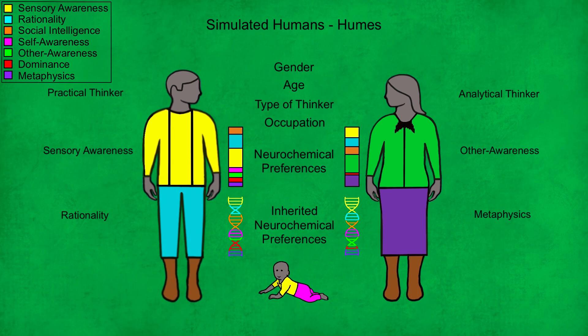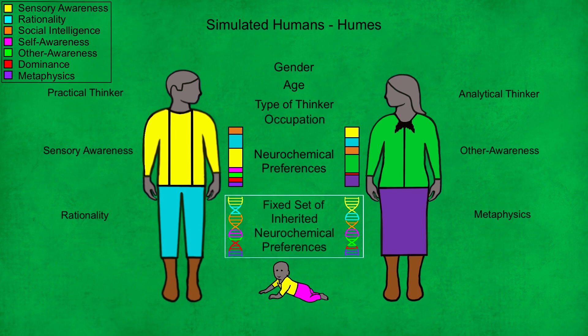All Humes have two sets of neurochemical preferences: a fixed inherited set, which is passed on to their offspring, and a changing set, which is influenced by their caregivers and their culture throughout their lives. It is the changing set that governs the way adult Humes contribute to their culture. This is a key aspect of the simulation.